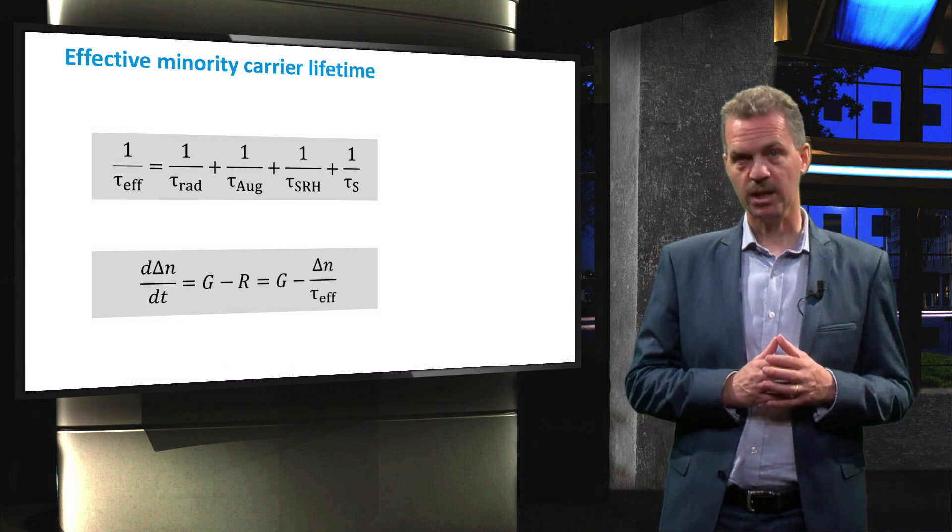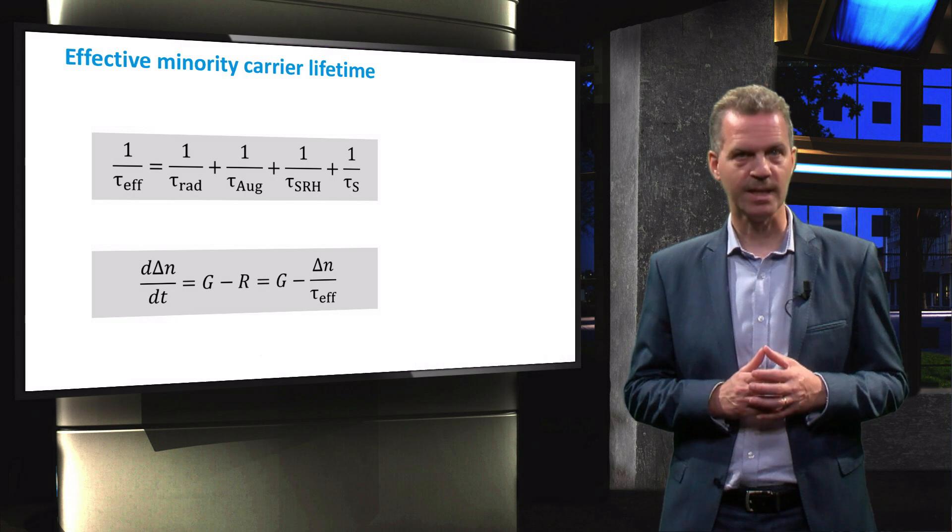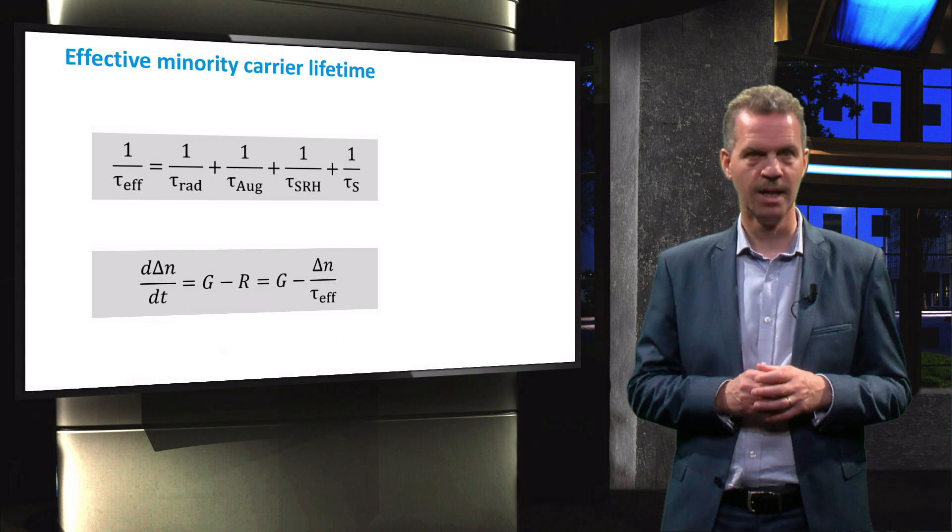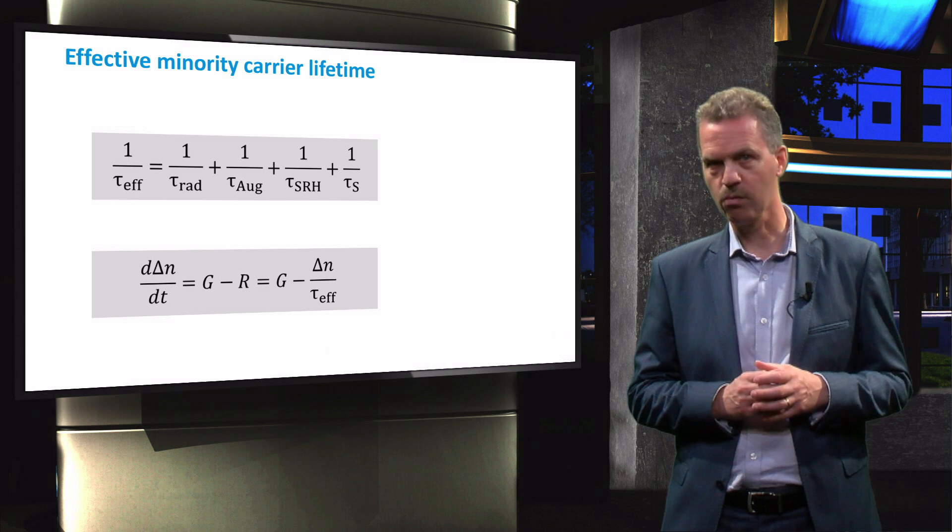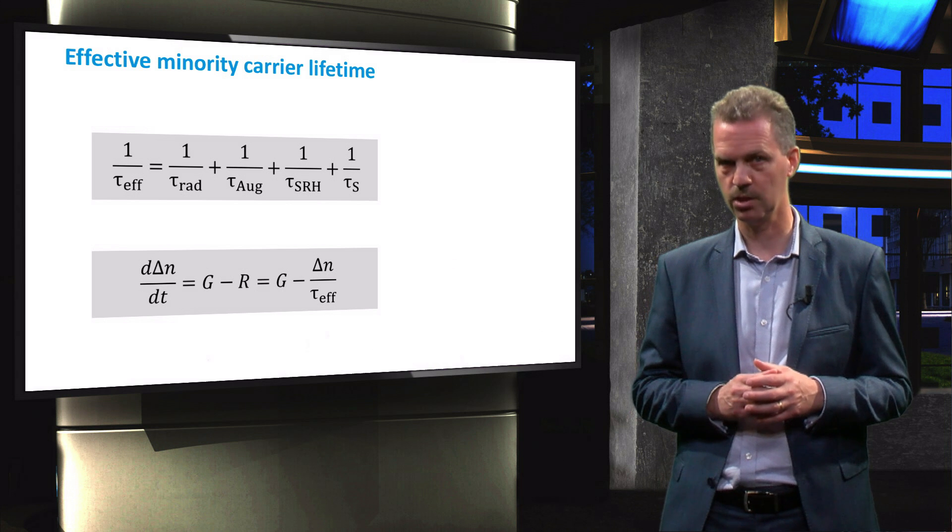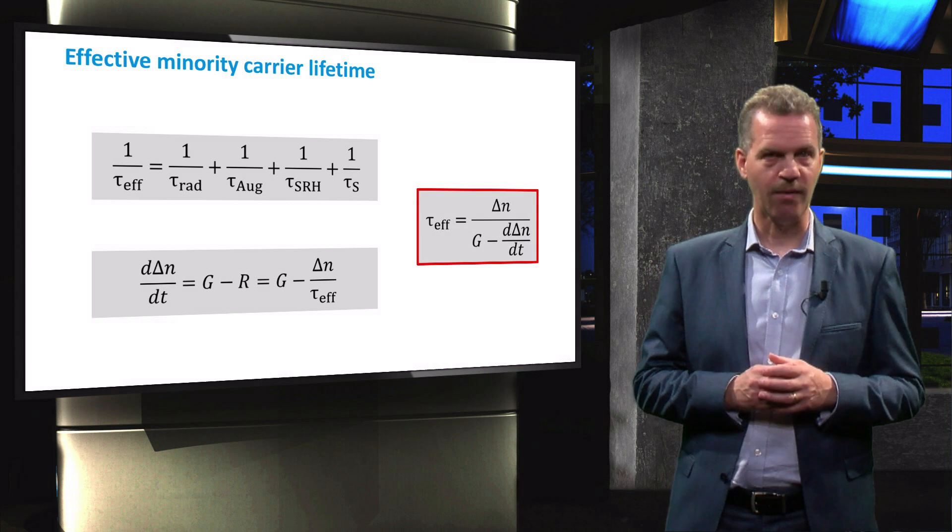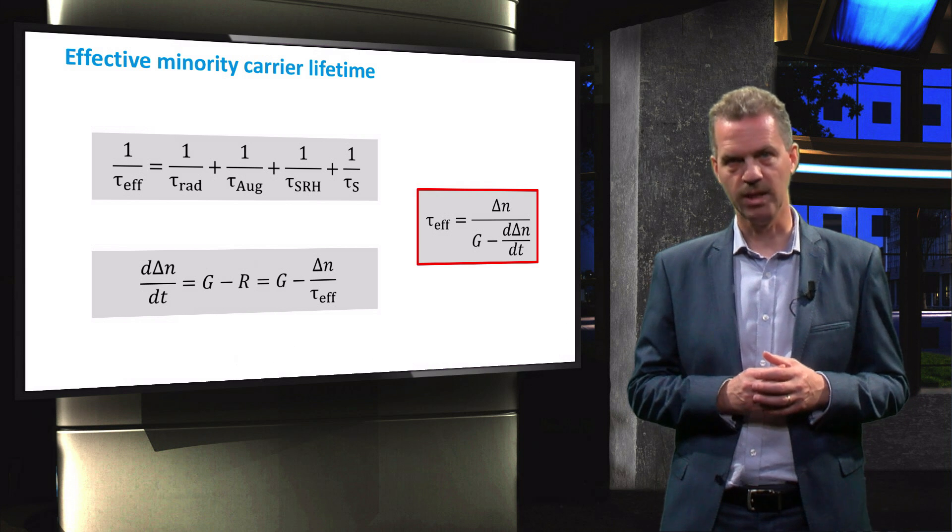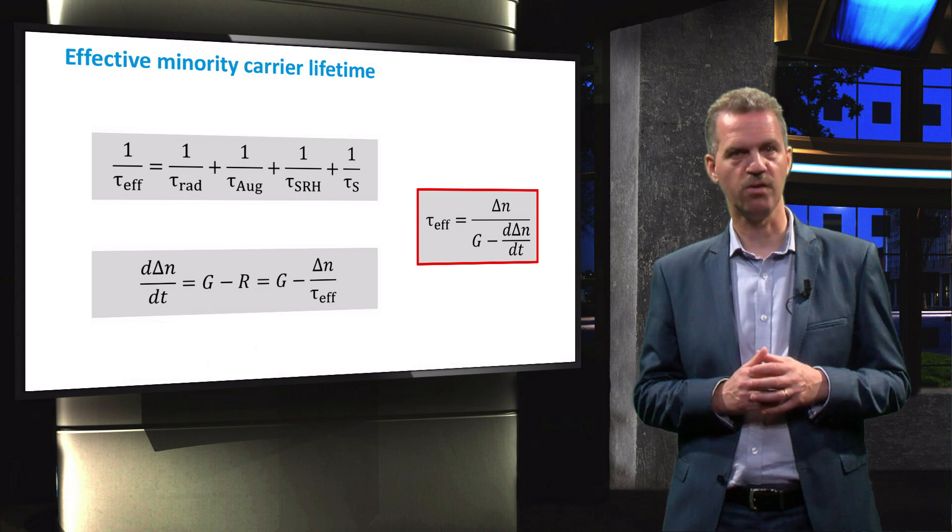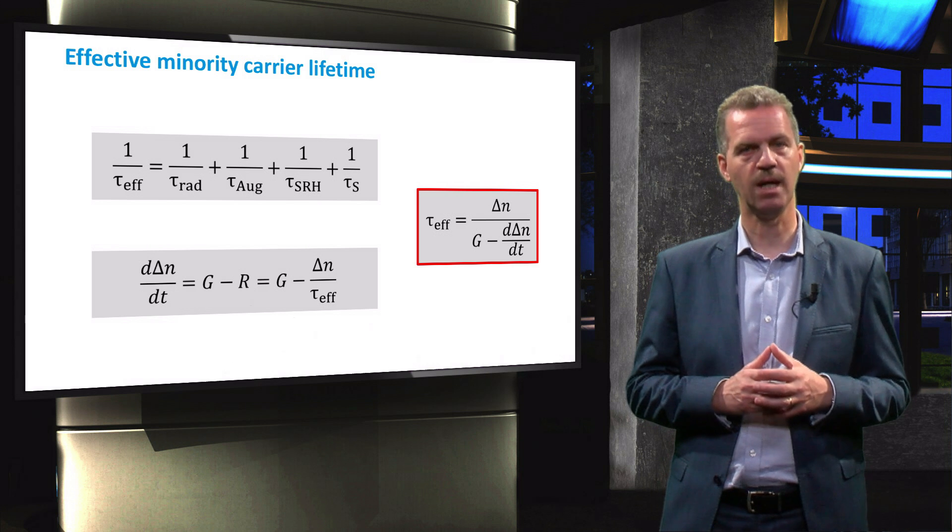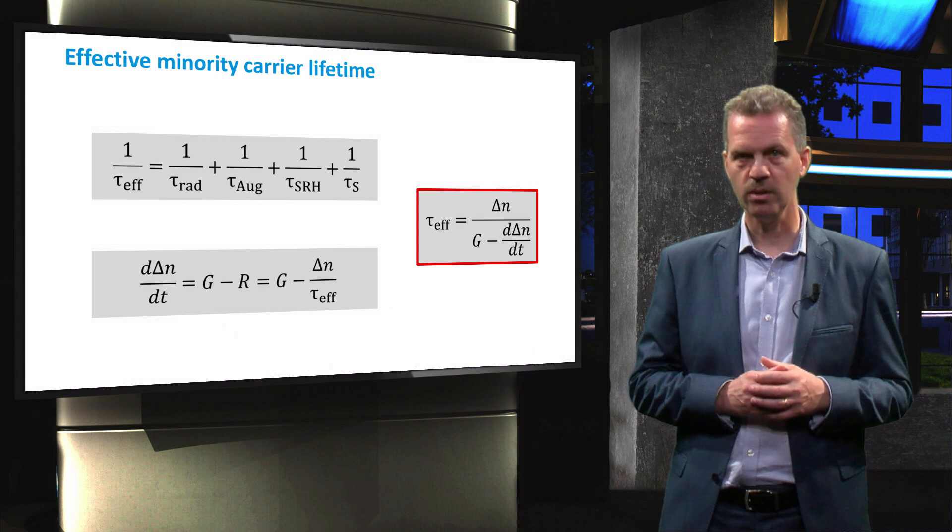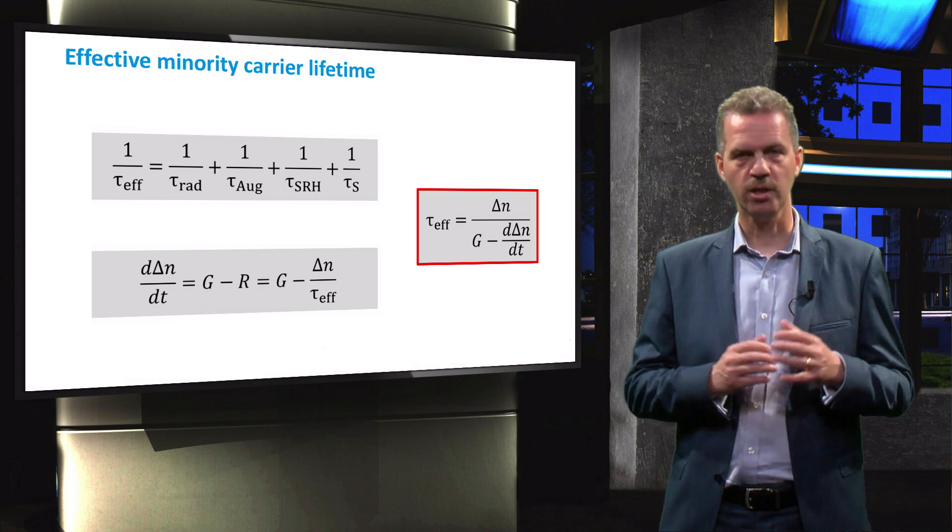For low-level injection, this recombination rate can be expressed as the excess electron concentration divided by the effective minority carrier lifetime, since the lifetime is interpreted as the overall time that an excess electron can stay in the conduction band before recombination. We can now express the effective minority carrier lifetime from the following equation. From this equation we can conclude that by measuring the electron density as a function of time, we can work out the effective lifetime τeff. The larger the excess electron concentration and the slower the drop in this concentration, the larger τeff.